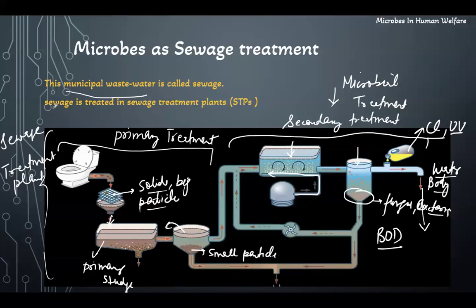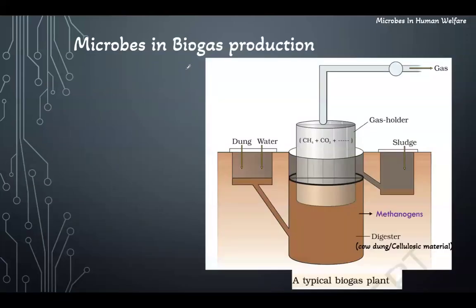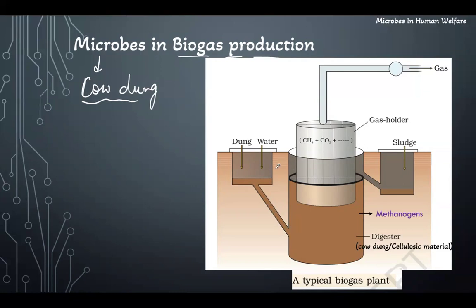Sewage treatment plants are very useful for the treatment of water. Next is biogas production. In various areas like villages, there is use of cow dung to produce biogas. Dung is mixed with water and passed through a large tank where it is stored and mixed with organisms called methanogens.